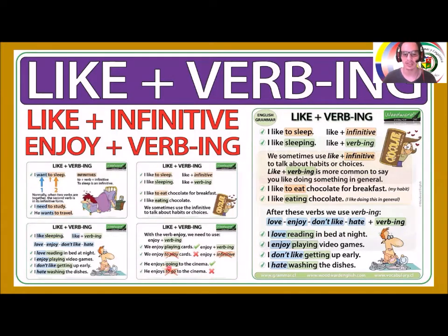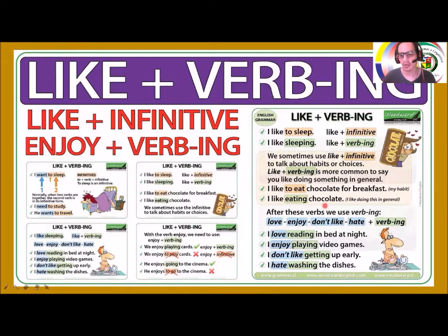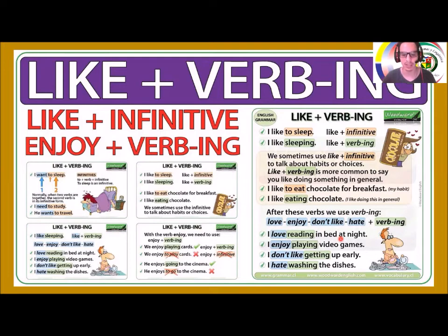With 'enjoy' you need the -ing form — 'going' — because you cannot use 'to go' in that case. Another example: I like to eat chocolate for breakfast — that's a habit. Or you can say I like eating chocolate — it's the same but more general. I love reading in bed at night, I enjoy playing video games — entre otros.